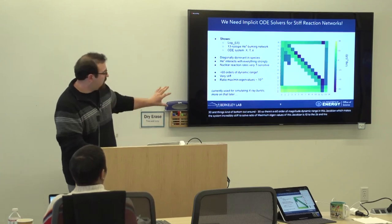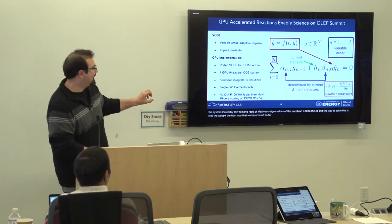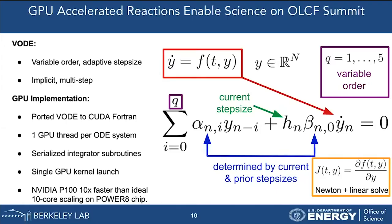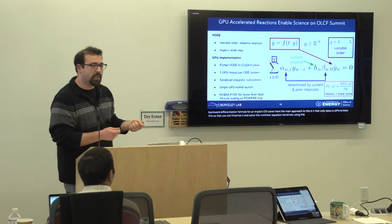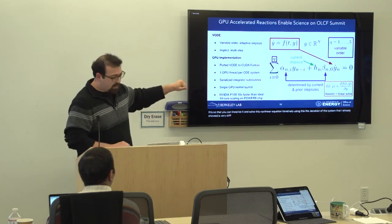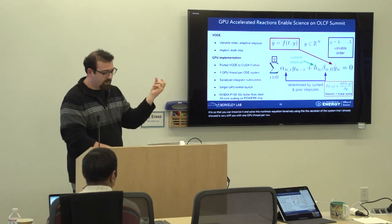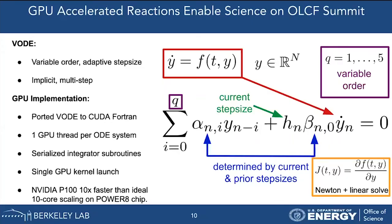All of this is done on the GPU with one GPU thread per simulation cell, and the integrator is serialized in that GPU thread. For an NVIDIA P100 GPU with constant initial conditions, this turns out to be 10 times faster than ideal 10-core scaling on a Power 8 CPU. One of the things this enables is simulations of x-ray bursts on GPUs.